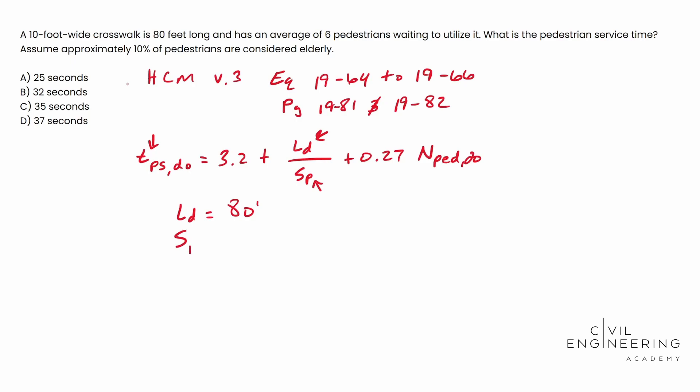Our speed of pedestrians, we can actually look that up. It actually says that if you have 0 to 20% elderly utilizing this crosswalk, you can use 4 feet per second as your speed. So I encourage you to go ahead and look at the manual and try and find that because you'll probably have to use it on the exam.